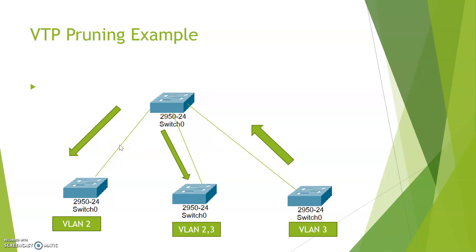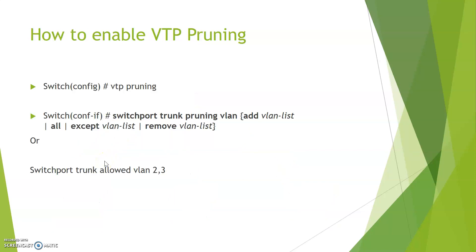In this way we can enhance or increase the network bandwidth. The ways to enable VTP pruning: go to configuration mode and specify 'vtp pruning', or use 'switchport trunk pruning' to prune any unwanted VLAN. The third way is 'switchport trunk allowed vlan', which is used for allowing any specific VLAN on the trunk.